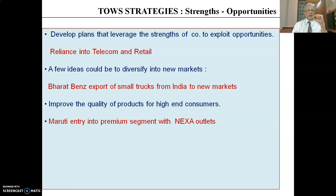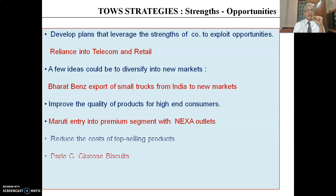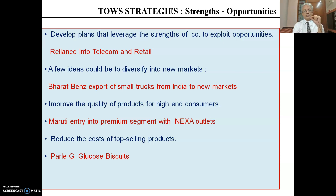You can also think about providing a quality product to high-end consumers. Maruti at one point of time was selling all cars under one umbrella, and high-end customers were not quite happy. So Maruti decided to go into a premium segment with a separate Nexa outlet, which really paid off very well. You can also think about reducing the cost of top-selling brands. For example, Parle-G Glucose Biscuits — one of the top-selling brands — decided to reduce costs through various initiatives, helping them acquire more market share in a very competitive situation.